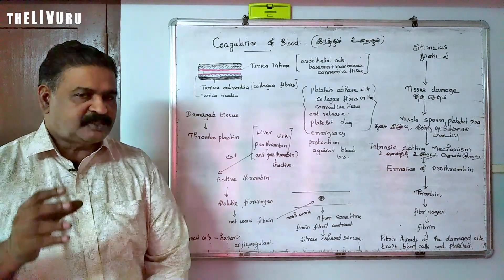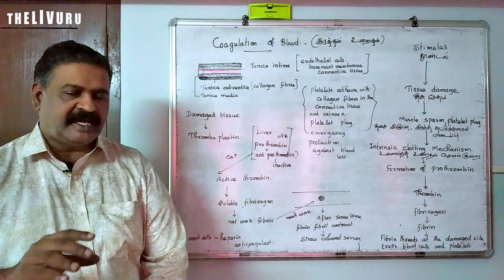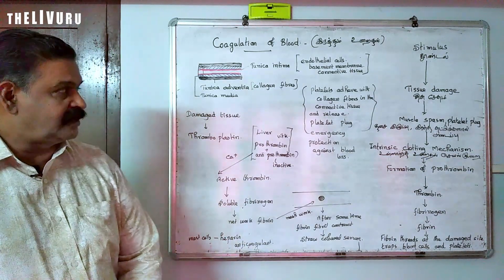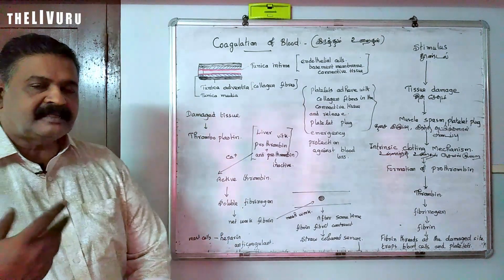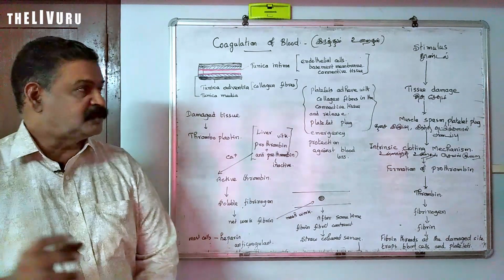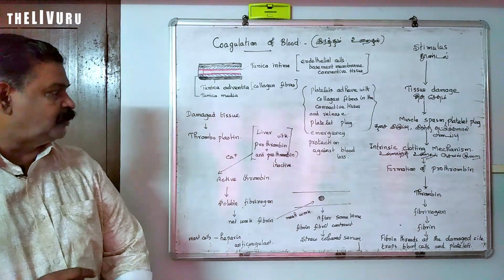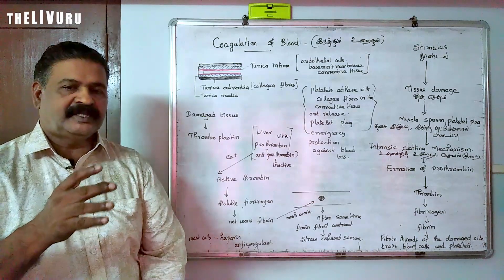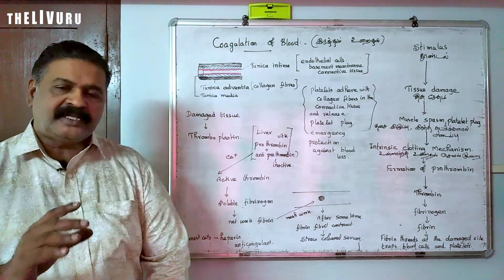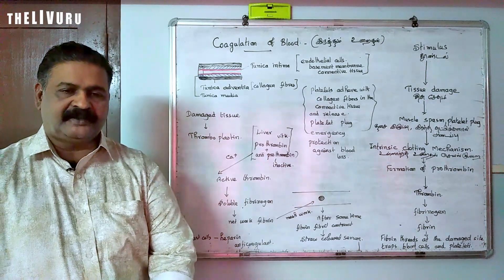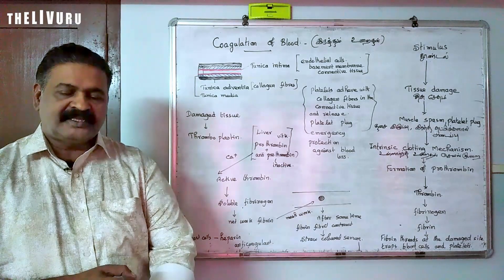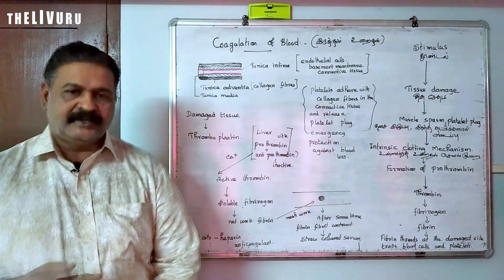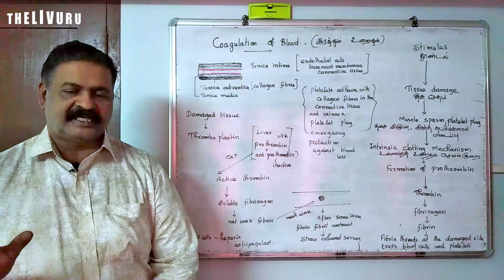The blood should get coagulated at optimum time. We need to understand when and how the blood should get coagulated. Coagulation is triggered due to the rupture of a blood vessel.